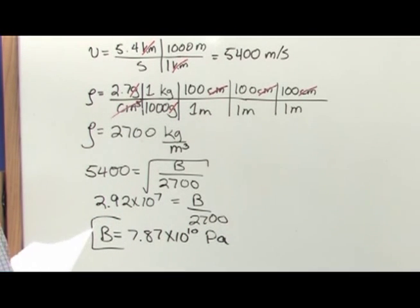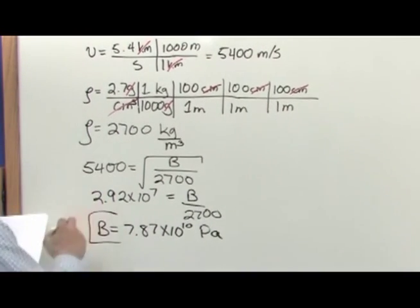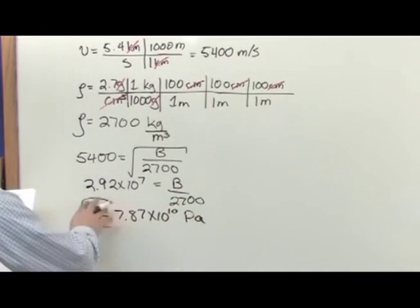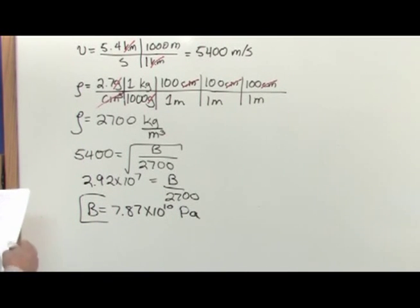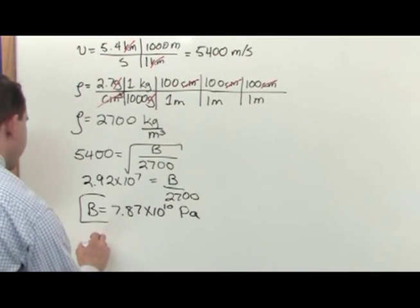So that is the answer: 7.87 times 10 to the 10 Pascals. Now for comparison, at that depth in the earth, this is what the bulk modulus of the crust of the earth is.